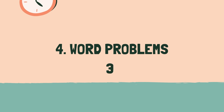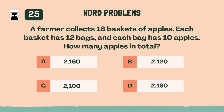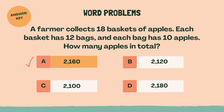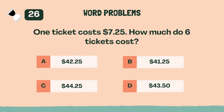3, 2, 1, go. A farmer collects 18 baskets of apples. Each basket has 12 bags and each bag has 10 apples. How many apples in total? The answer is A, 2,160. One ticket costs $7.25. How much do six tickets cost?